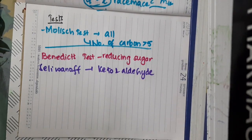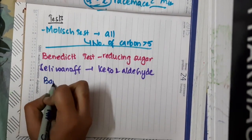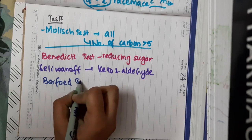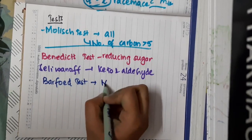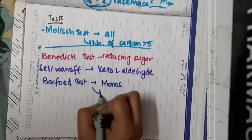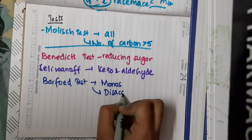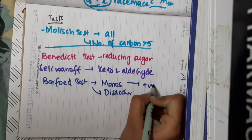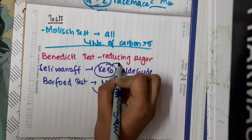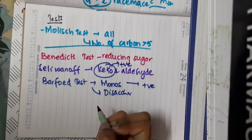Then we have test called Barfoed test. This Barfoed test will differentiate monosaccharides and disaccharides. This Barfoed test is positive for monosaccharides and the Seliwanoff's test is positive for ketose sugars.